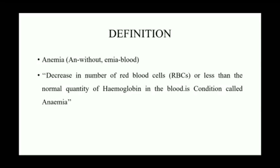Anemia ko agar tod ke dekhen to: 'an' plus 'emia' — 'an' matlab without, matlab absence of, lack of blood cells. 'Emia' matlab blood. Definition: decrease in the number of red blood cells or less than normal quality of hemoglobin in the blood — this condition is called anemia.